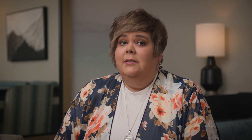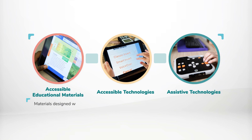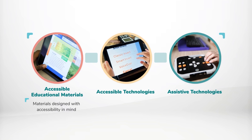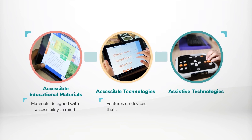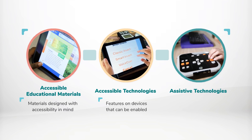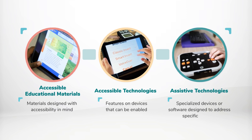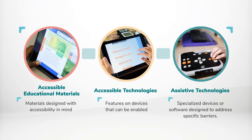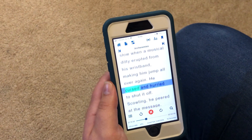So to summarize: accessible educational materials are materials that have been designed with accessibility in mind. Accessible technologies are features on devices like phones and laptops that can be enabled. And assistive technologies are specialized devices or software that are designed to address specific barriers. Now, some accessible technology features may also be assistive technology features. Like a speech-to-text feature on a phone can make text more usable for anyone, which makes it accessible technology. But it can also help someone with low vision, which makes it assistive technology.